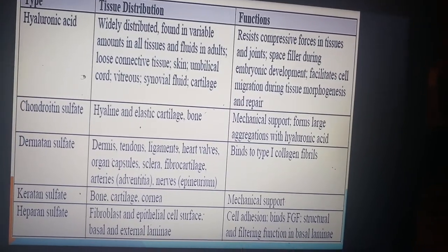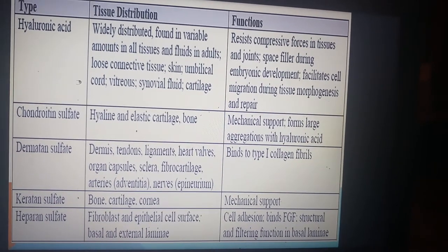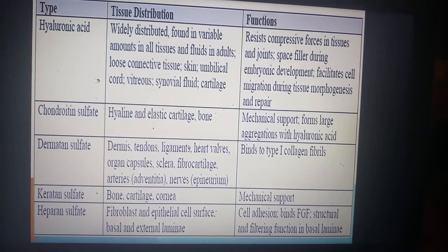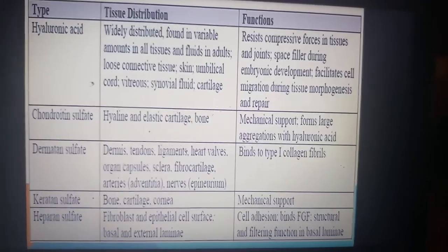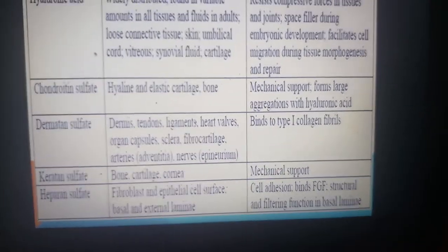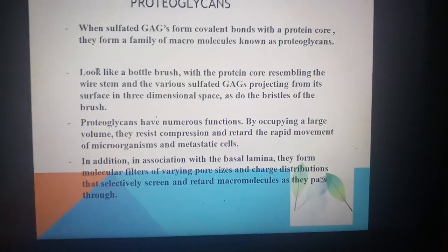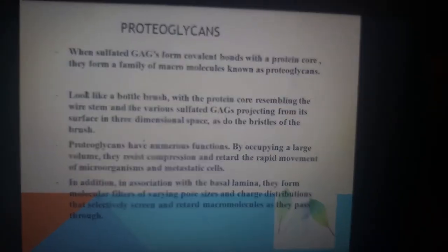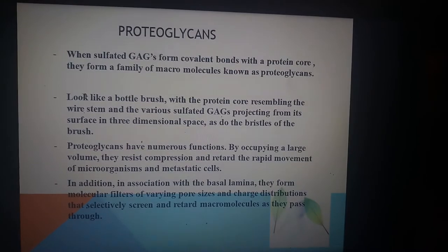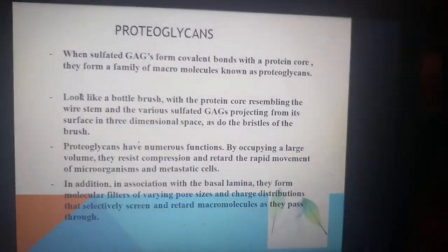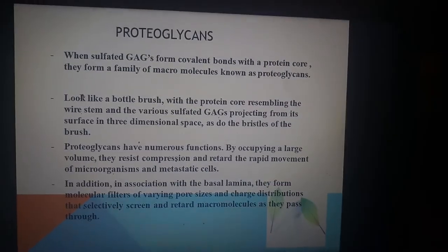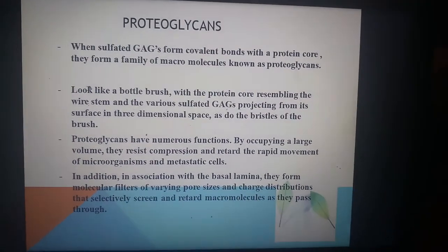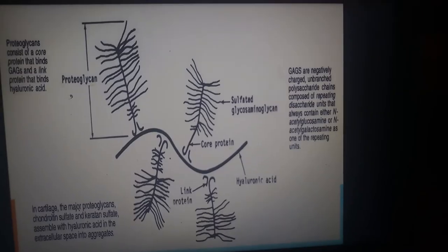Keratan sulfate is present in bone, cartilage, and cornea, providing mechanical support. Heparan sulfate is found on fibroblast and epithelial surfaces and in the basal and external lamina; its functions include cell adhesion, binding fibroblast growth factors, and structural and filtering roles in the basal lamina. When sulfated glycosaminoglycans form covalent bonds with a protein core, they form a family of macromolecules known as proteoglycans, which look like a bottle brush with the protein core as the wire stem and sulfated GAG chains projecting outward.